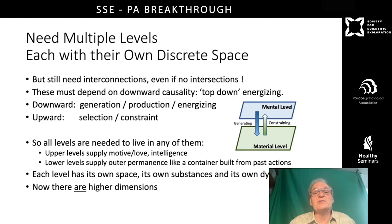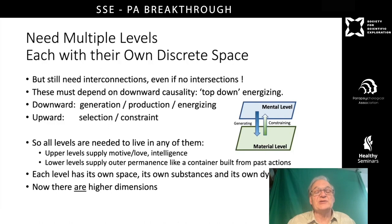I want to explore the alternative view that there are multiple levels or planes, each with their own discrete space. But we still need interconnections between them, even if there are no longer intersections. I'm going to look at a view in which there is downward causality — top-down energizing from the beginning to the end, a process of generation or production or energizing — and upward, I'm going to consider selection or constraint.